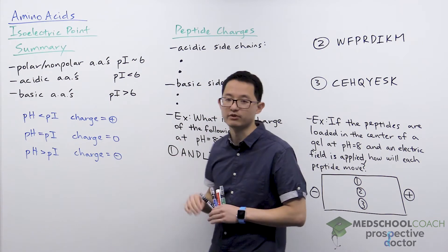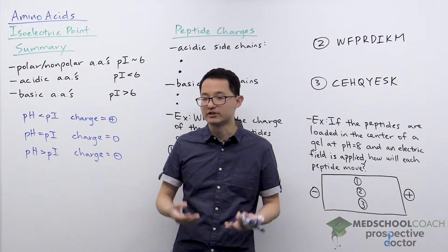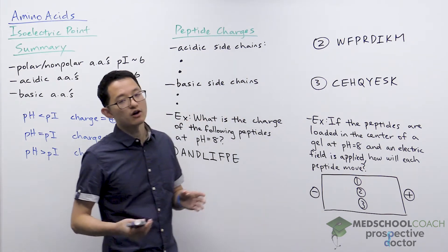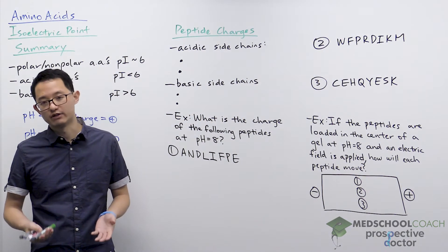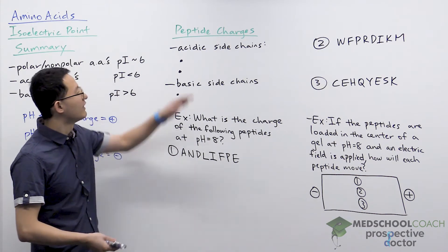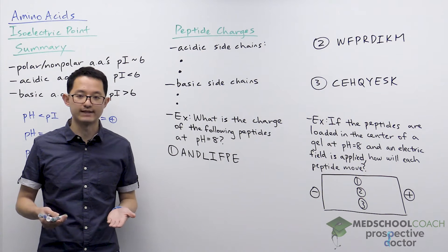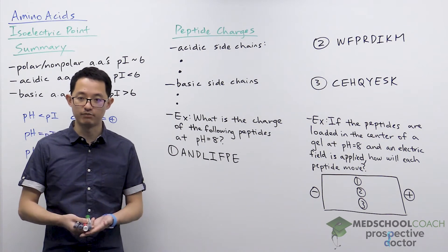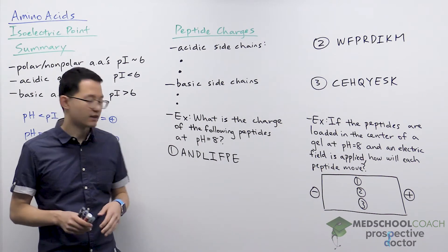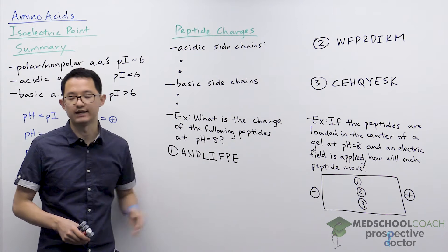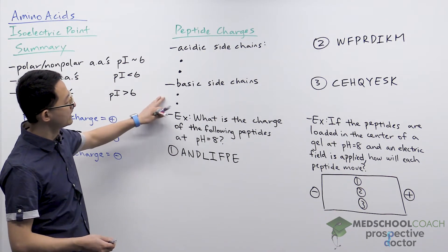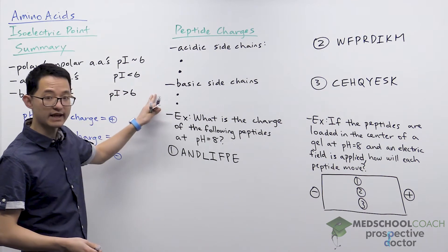That's how isoelectric points work and how you can determine the isoelectric point of individual amino acids. On the MCAT, you're not always going to be working with individual amino acids — sometimes you'll get questions asking about the charge of peptides, which is essentially multiple amino acids linked together by peptide bonds. Here we're going to go through how to answer questions like: what is the charge of this peptide at a particular pH? The two important things to keep in mind are the charges of the acidic and basic side chains.